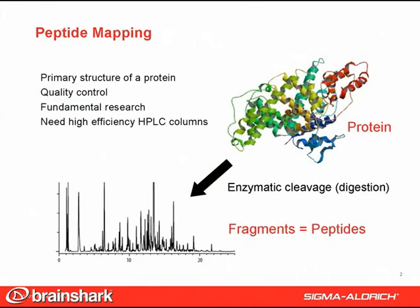Peptide mapping is an established technique for assessing changes to the primary structure of a protein. This has applications in areas of quality control or fundamental research in which changes to the protein sequence or to the chemical modification of amino acids need to be monitored. Peptide maps are generated by cleaving or digesting the protein with proteolytic enzymes to generate a finite number of peptide fragments. The digested sample containing peptide fragments is then resolved using electrophoresis or chromatography.